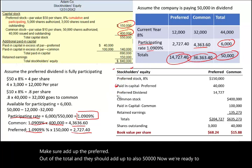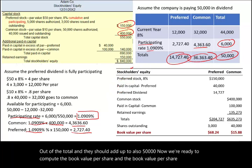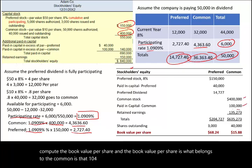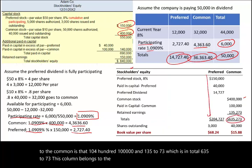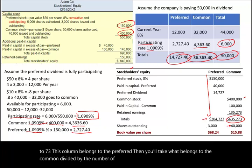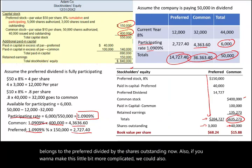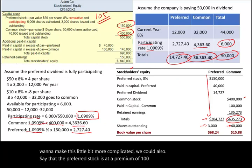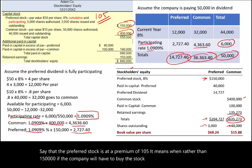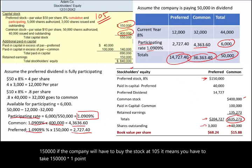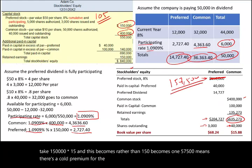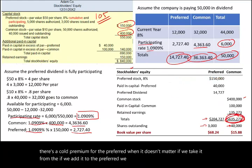Now we're ready to compute the book value per share. What belongs to the common is $400,000 + $100,000 + $135,273 = $635,273. Divide by the number of common shares outstanding for the common book value. Divide what belongs to the preferred by preferred shares for the preferred book value. Additionally, if there is a call premium — say 105% — you take $150,000 × 1.05 = $157,500, adding that premium to the preferred column and deducting it from the common section.